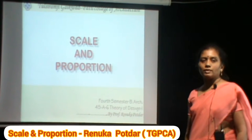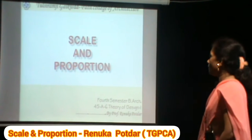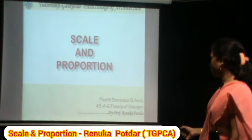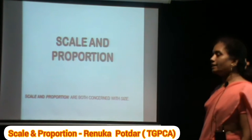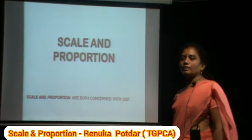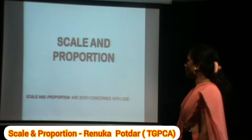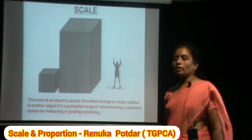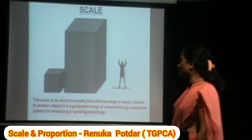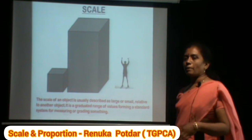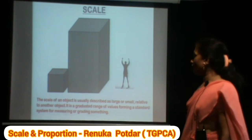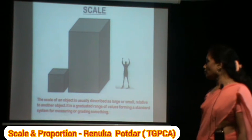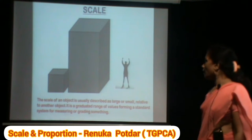We will discuss scales and proportions, which are part of the elements of design, Unit 1. Scales and proportions are both concerned with size. The scale of an object is usually described as large or small. If this is a relative term — one object is compared with another — then we refer to it as scale. Scale is a graduated range of values forming a standard system for measuring and grading something.